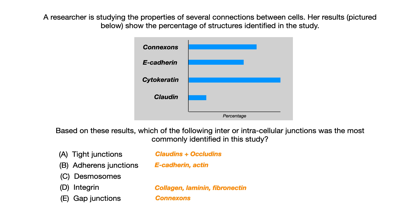These questions generally have two steps to them. Step one: you look at the data, you look at the graph, you look at the infographic, you look at the plot, and you ask yourself, what are they trying to tell me? In this case, cytokeratin was the most commonly identified structure. Step two is working backwards and pairing that information taken out of the graph with the information that you studied in First Aid or whatever other resource you'd like to use to get the correct answer. These two-part questions are very important and you're going to see them on USMLE and Comlex.